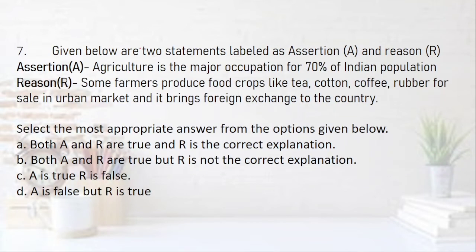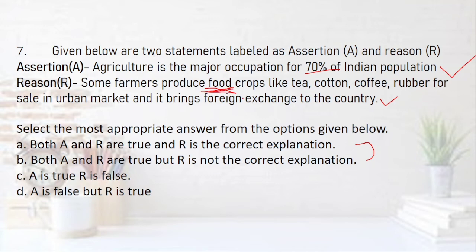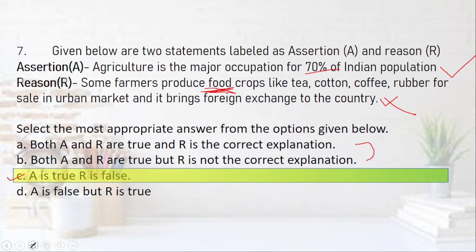Question 7: Assertion — Agriculture is a major occupation for 70% of the Indian population. This is correct. Reason — Some farmers produce food crops like tea, cotton, rubber for sale in urban markets and it brings foreign exchange to the country. Read it again carefully — it says 'food crops like tea, cotton, rubber.' Are these food crops? Obviously not. So the reason is wrong and the answer is simply A is true and R is false — option C.